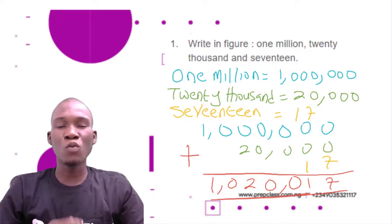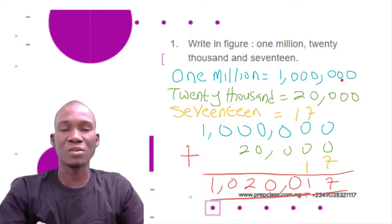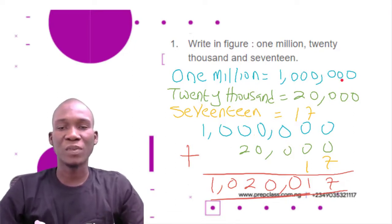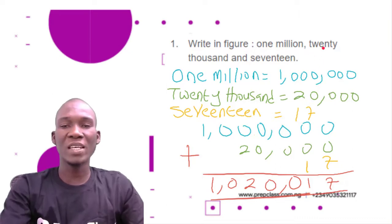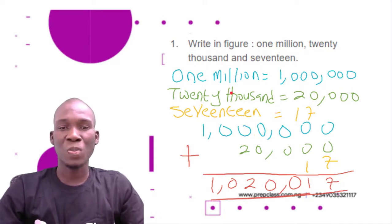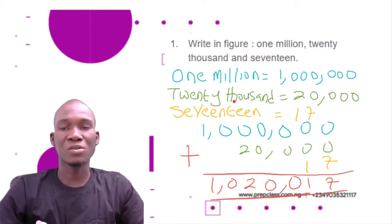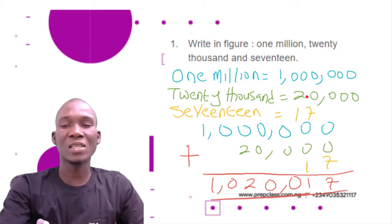So if I write one million — one with six zeros — that is one million. Now the next word is 'twenty thousand.' Thousand has three zeros, so because I have twenty thousand it means I should be writing twenty with three zeros. That gives us twenty thousand.